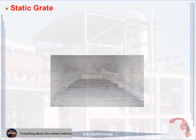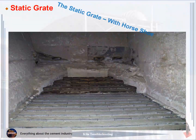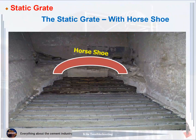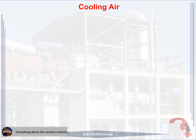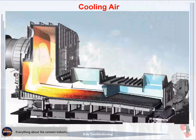This picture shows the design of the static grate shaped like a horseshoe. Cooling air: all types of air inside the clinker cooler — this picture shows air movement and different temperatures inside the clinker cooler.